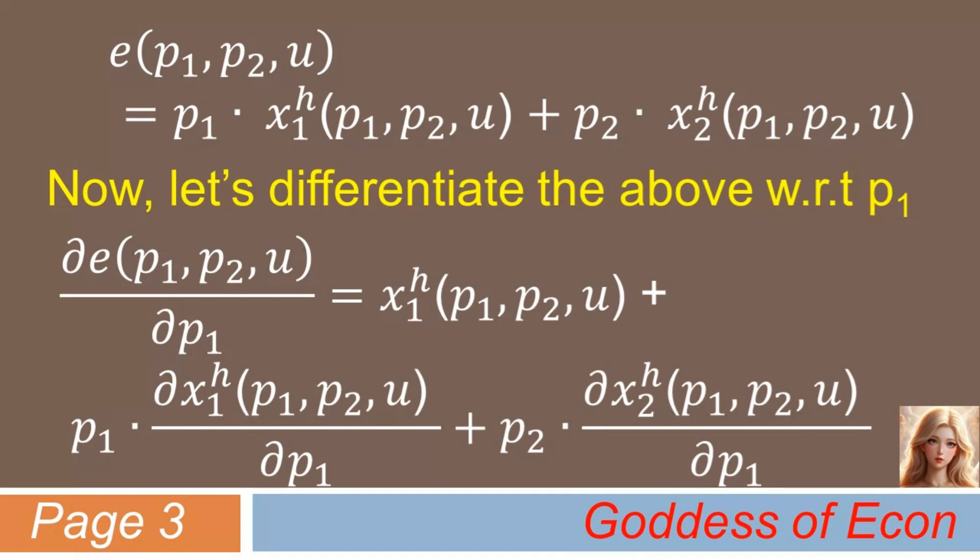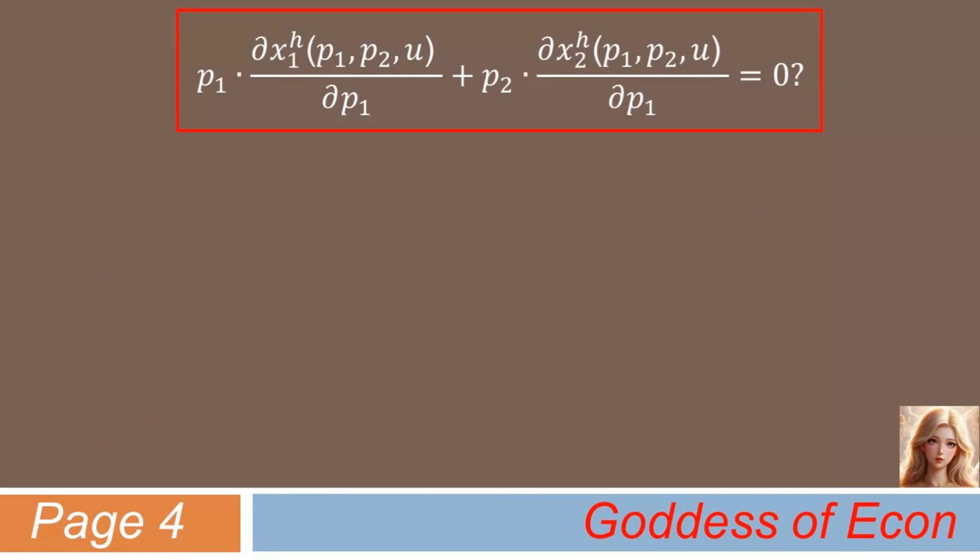Here, we have the Hicksian demand for good 1, and then two more terms that look a bit complicated. What all this suggests is that it is implied by Shepard's lemma that those two terms should add up to zero. Otherwise, Shepard's lemma would not hold. But then, how can we find out if those two terms add up to zero? In other words, how can we prove the lemma?